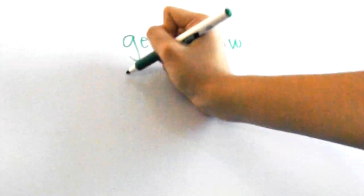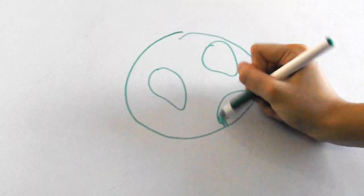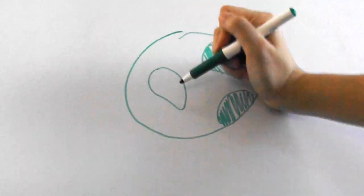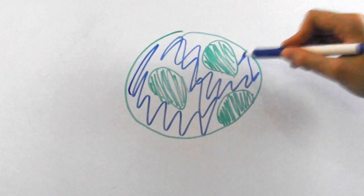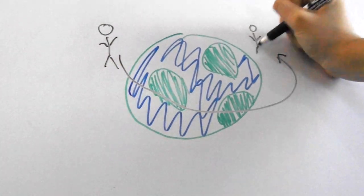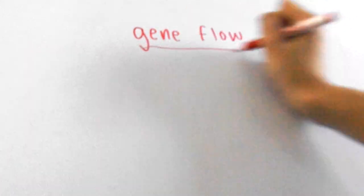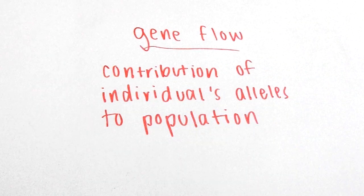Next up is gene flow. That's basically immigration and emigration. Gene flow is the result of the movement of individuals. A good example given in the Campbell's AP Biology textbook is that humans move freely around the world and as mating occurs between different populations you start to see different phenotypes appear. The contribution of one individual's alleles to a population is therefore what gene flow is.